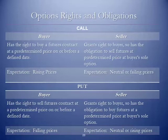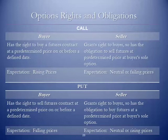In terms of a put option, this gives the buyer the right to sell futures contracts at a predetermined price on or before a defined date. Their expectation is that prices will fall and they want to establish a floor price — a guaranteed minimum price. The seller then grants that right to the buyer, so they have the obligation to potentially have to buy futures at the predetermined price stated in the contract — the strike price — at the buyer's sole discretion.